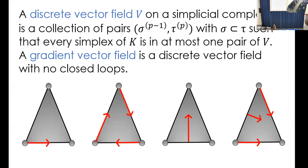I'm going to be more interested in gradient vector fields. These are discrete vector fields — matchings on my simplicial complex — but what I want to exclude in a gradient vector field is a closed loop. I can think of these arrows as giving me a direction: I start at the tail of an arrow, follow it to the tip, and see if there's another tail to follow. If I eventually end up where I started, I call that a closed loop, and I want to exclude those for a gradient vector field.